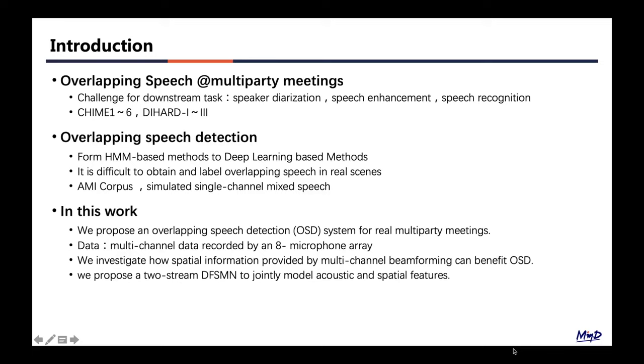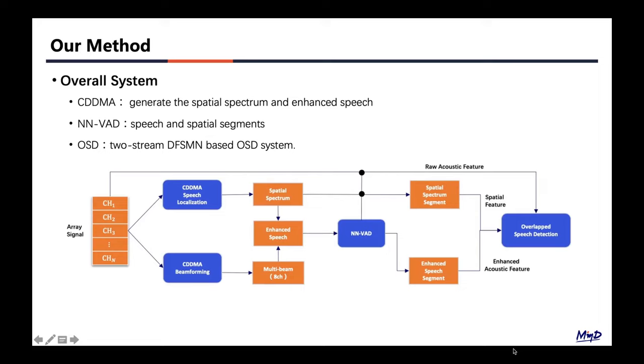We investigate how spatial information provided by multi-channel beamforming can benefit OSD. The overall system is shown in this figure. It consists of three main components: GDMA-based beamforming and source localization on VAD, and deep learning-based methods for OSD.